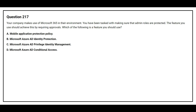Question number 217. Your company makes use of Microsoft 365 in their environment. You have been tasked with making sure that admin roles are protected. The feature you use should achieve this by requiring approvals. Option A: mobile application protection policy. Option B: Microsoft Azure AD Identity Protection. Option C: Microsoft Azure AD Privileged Identity Management. Option D: Microsoft Azure AD Conditional Access. The correct answer is Option C, Microsoft Azure AD Privileged Identity Management.